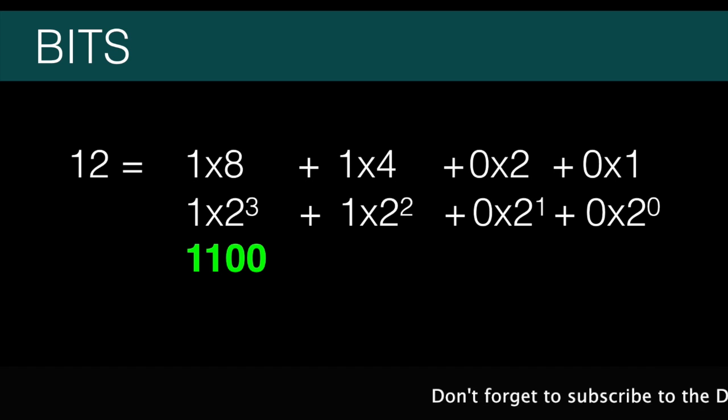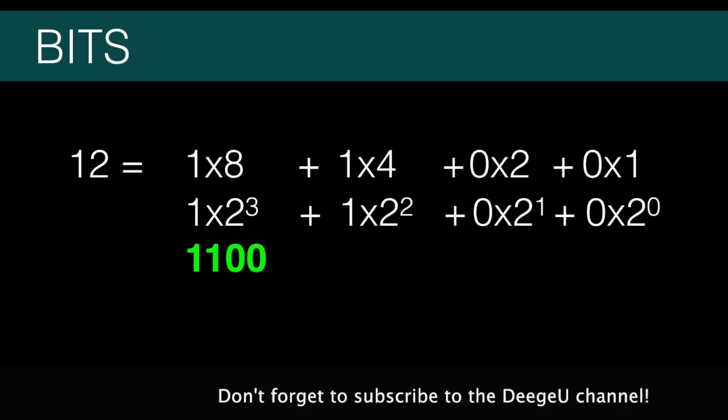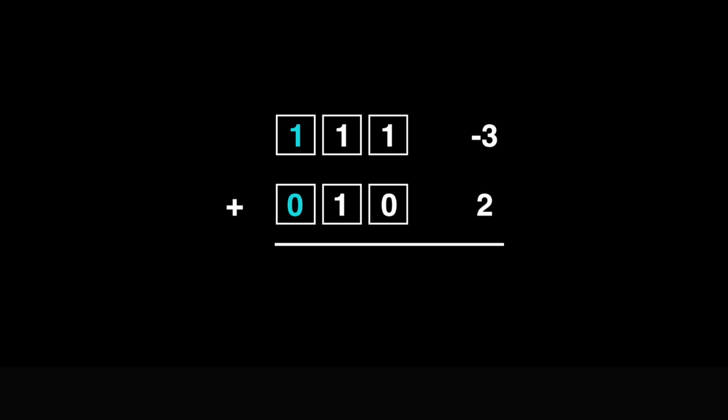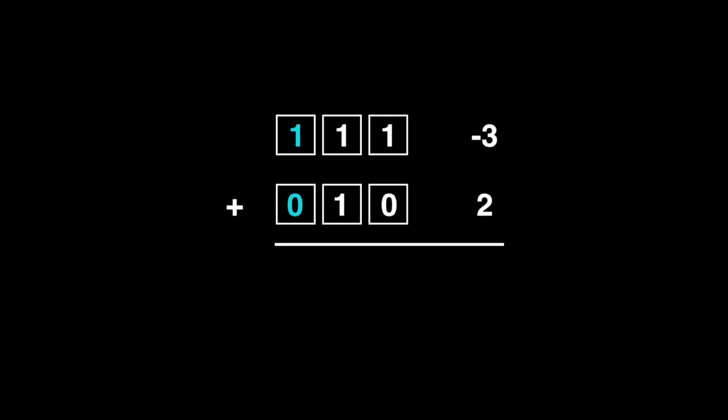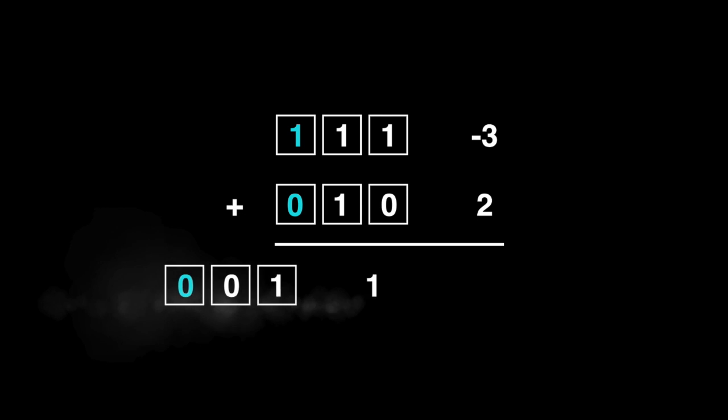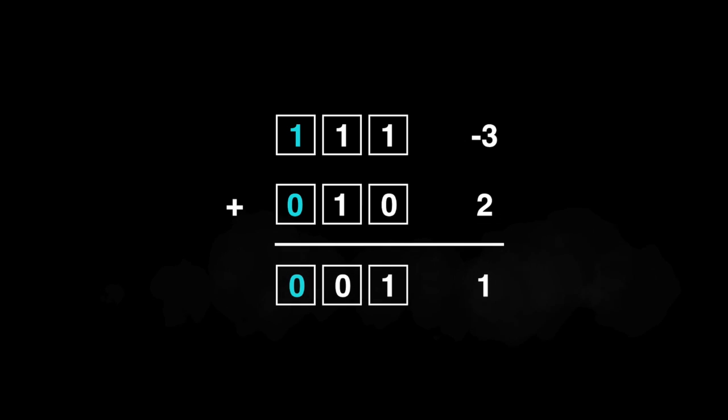Your first thought might be to sacrifice the first digit and use it as a sign bit. Let's try that. We'll start with 3-bit numbers and add minus 3 and 2. The first number will be 111 — that will be our negative 3. And then we'll add 010, that's our 2. Add it and we get 001, or 1.